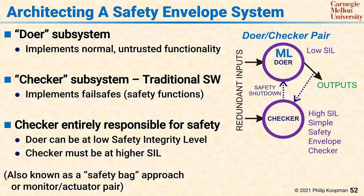The checker's job is not to duplicate the doer's functionality, but simply to police the safety envelope boundary and detect when it's been crossed. This means the doer can be at a low safety integrity level while the checker can be entirely responsible for safety, operating at a high safety integrity level. This classic pattern has also been known as a safety bag approach or a monitor-actuator pair — all basically the same idea of having a high SIL checker policing the behavior of the low SIL doer.